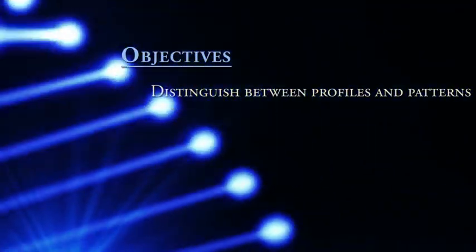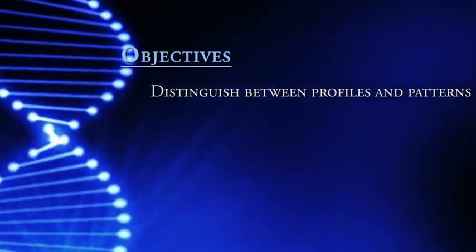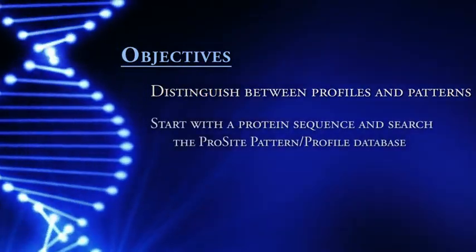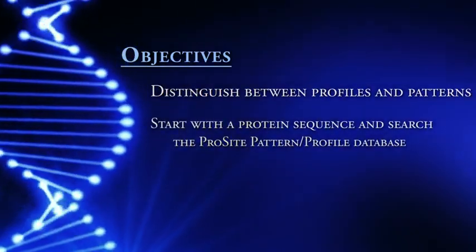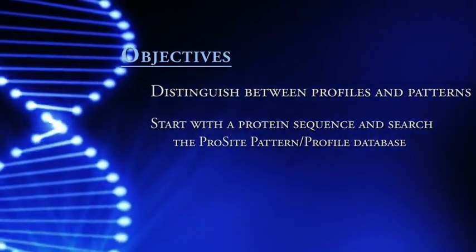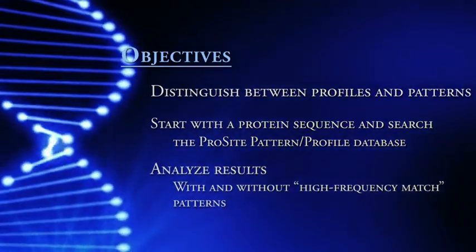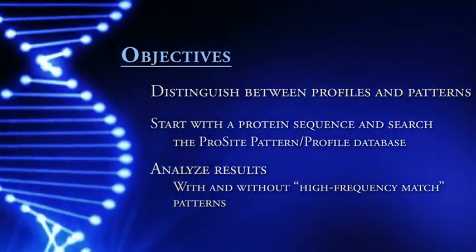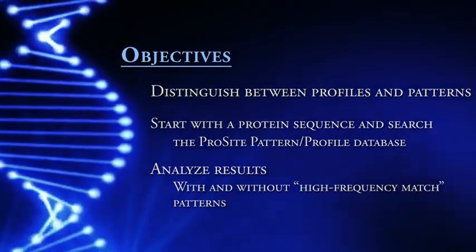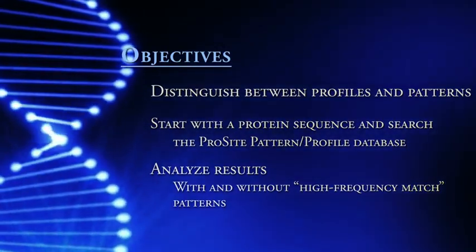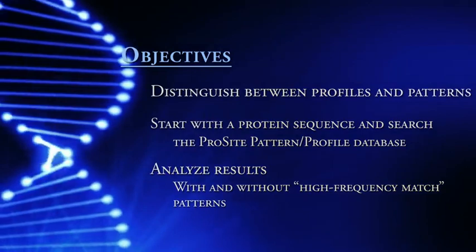For our objectives, we want to be able to distinguish between profiles and patterns, then start with a protein sequence and search the ProSight database, which consists of both patterns and profiles, and then analyze the output. We will see something called the high-frequency match pattern, and I will explain what that is and be able to distinguish between patterns that are not high-frequency match and the ones that are.